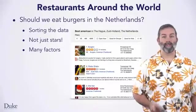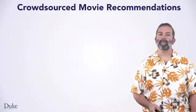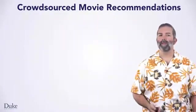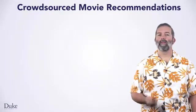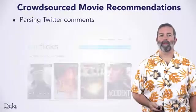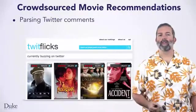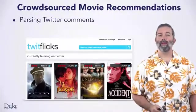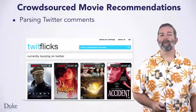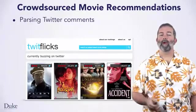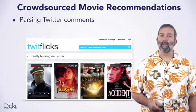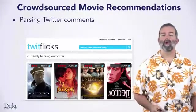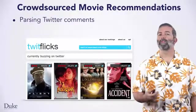All this talk about restaurant ratings is making me hungry. Instead of restaurants, you can also get recommendations about movies, and this is what you'll write for this capstone project. The website twitflix.com mines Twitter for tweets that include comments about current movies. These comments are turned into ratings that are made part of the input to your program. To use these ratings, you'd have to get them, parse them, and write a program to determine which movies someone should watch.